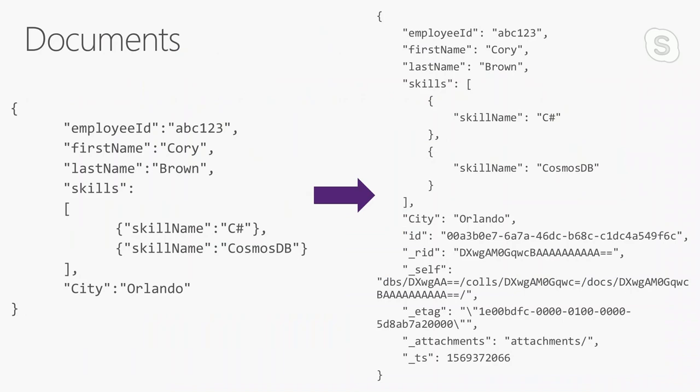Documents are the actual records. When you take a JSON document and store it in a SQL API collection, Cosmos DB adds some system fields. The ID represents a unique name within a logical partition and can be system-generated or user-defined. The ID is also used for optimistic concurrency control — if multiple clients write to the same record, the ID tag helps resolve concurrency issues. The _ts field is the timestamp, and _self is the actual URI for the item.